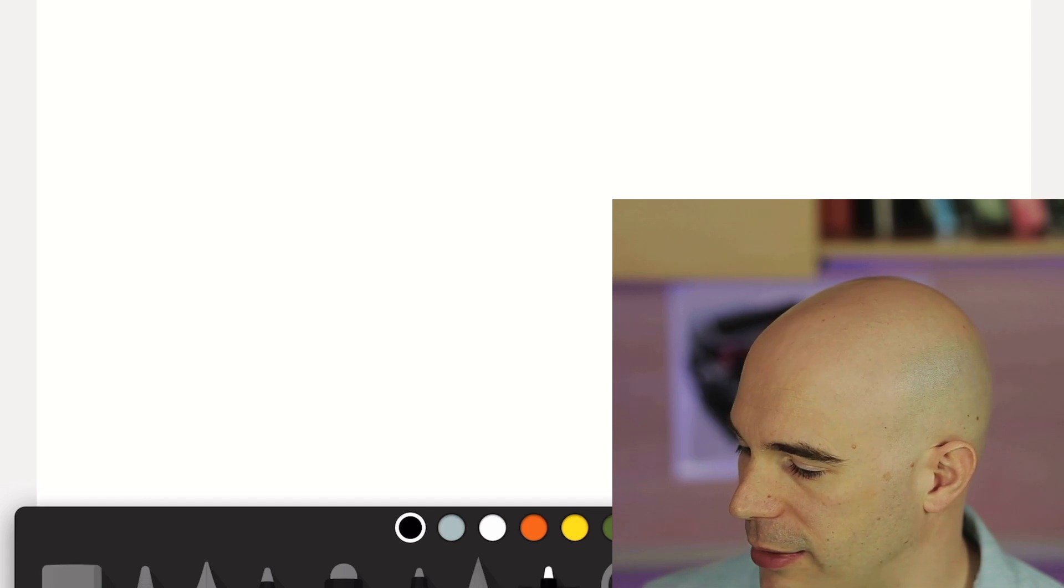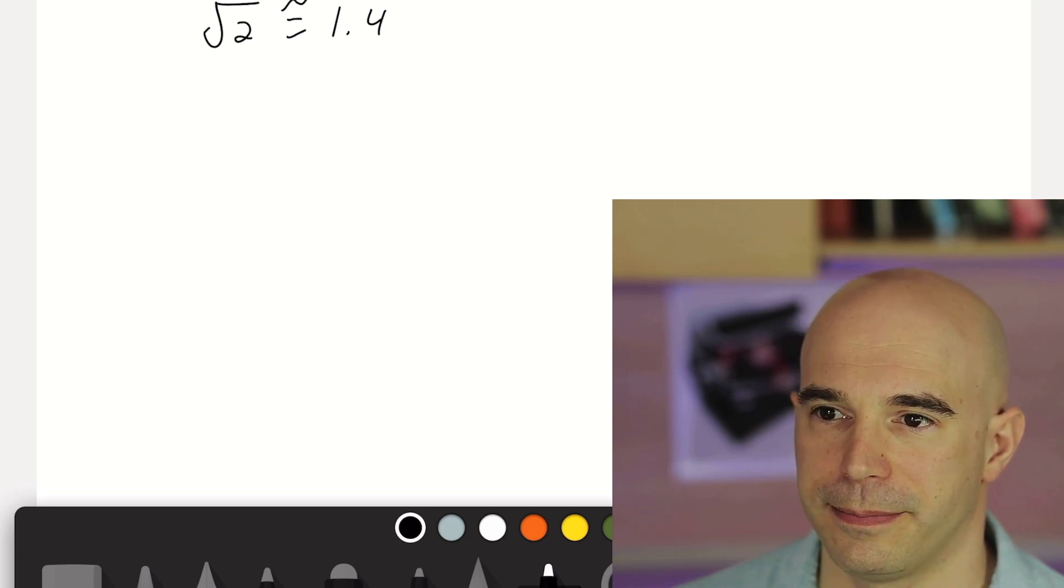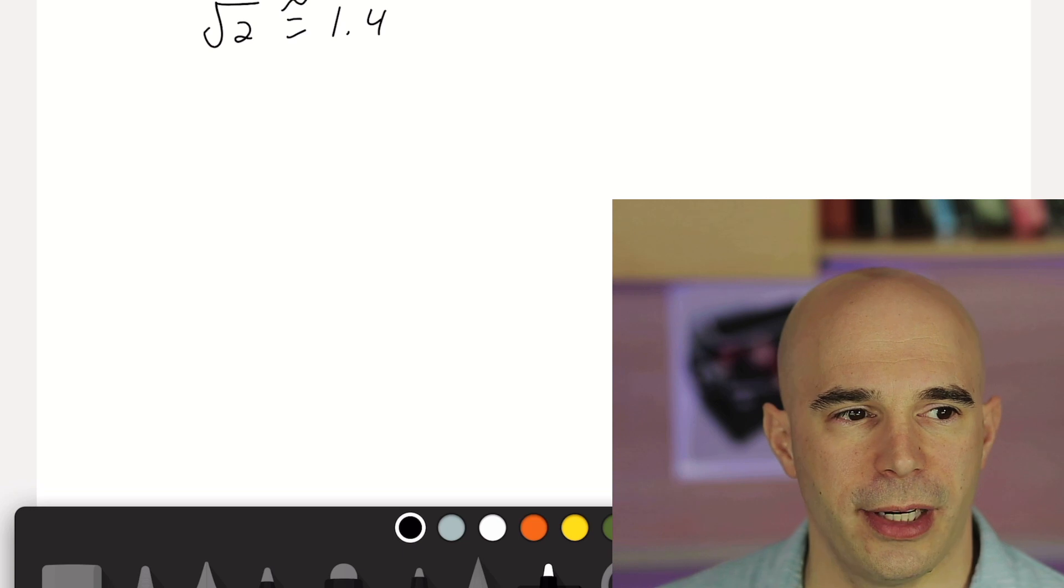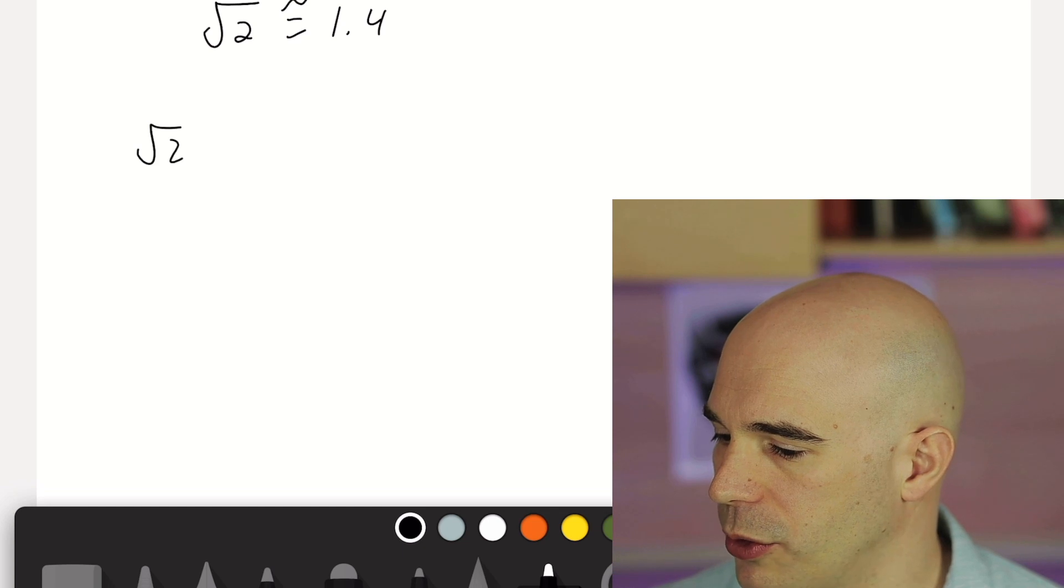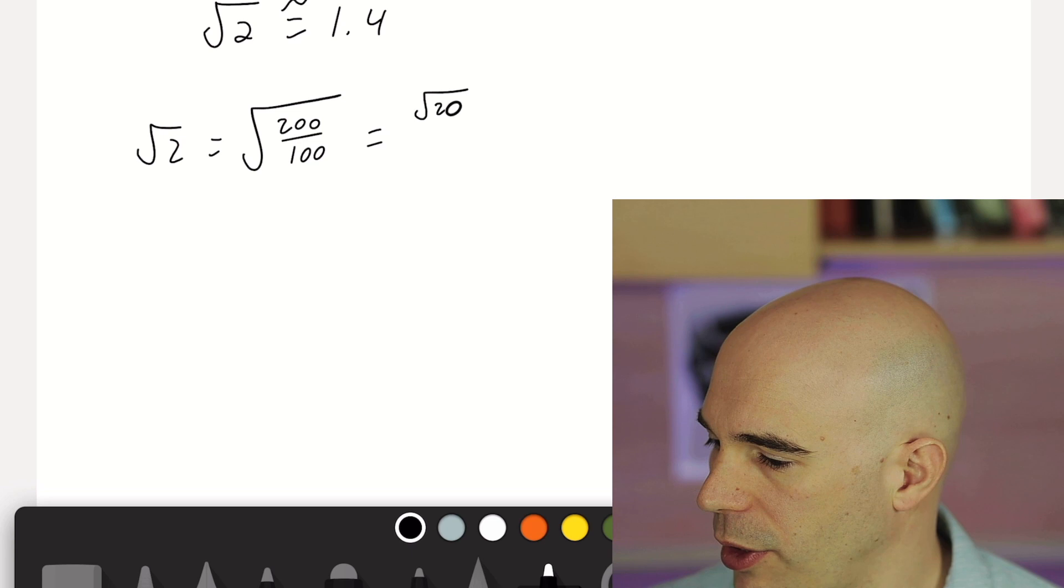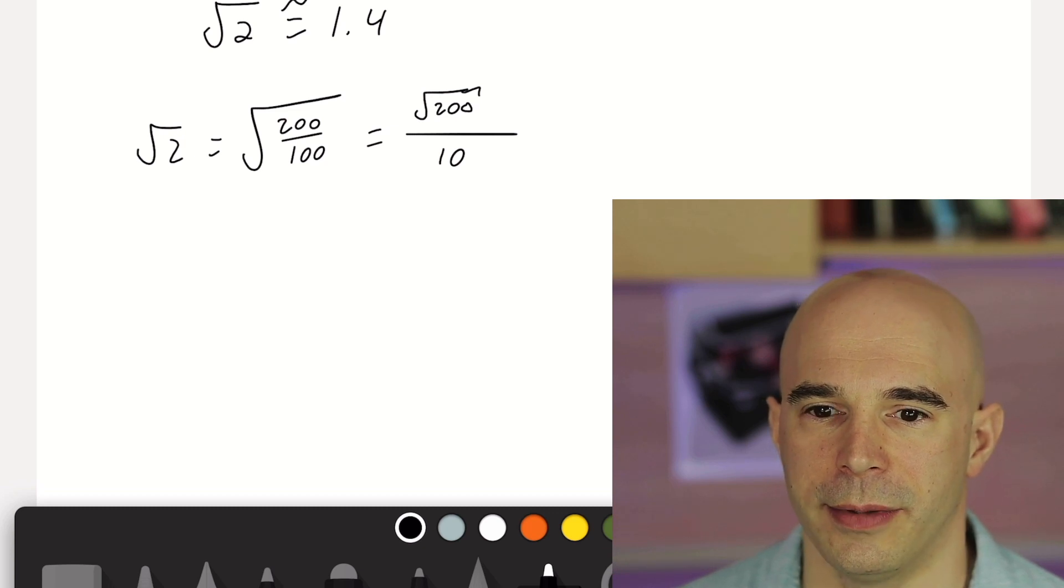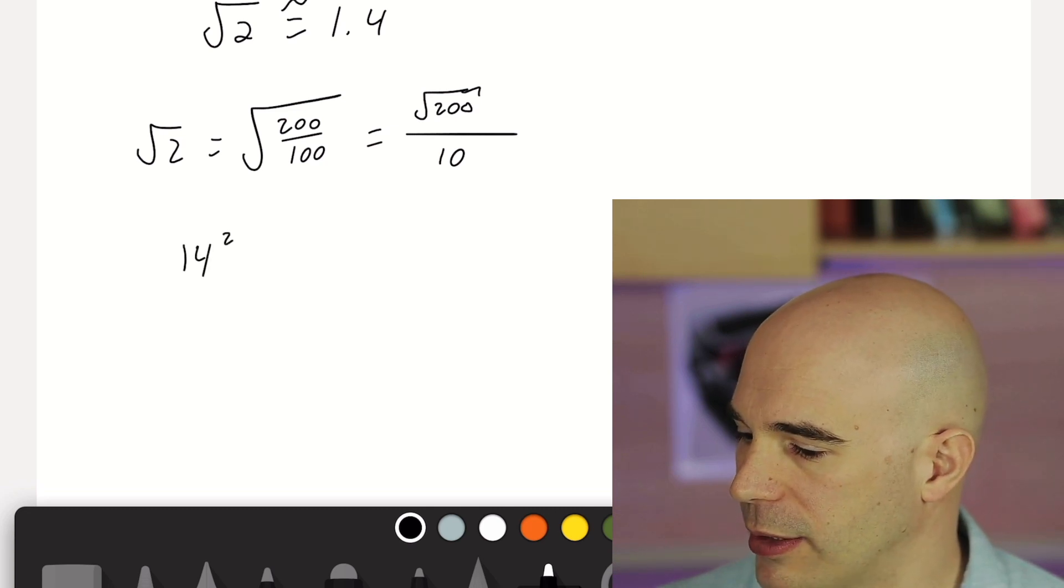And even things like square root of 2, right? Yes, we need to memorize that the square root of 2 is approximately 1.4. We need to have that memorized. But why would we want to memorize that from a flashcard when we could instead say, look, square root of 2 is the square root of 200 over 100. And the reason I was motivated to write it like that is because then I can pull the 100 out of the square root like that. And why do I like to have a 10 in my denominator? Because of the decimal system. Because then I can just use a decimal point at the end. This goes back to the first question of the day. So now all I have to do is figure out the square root of 200.